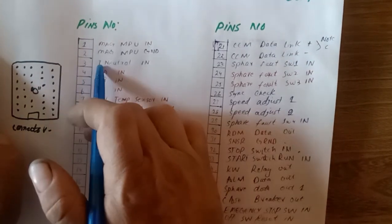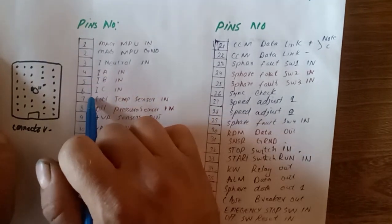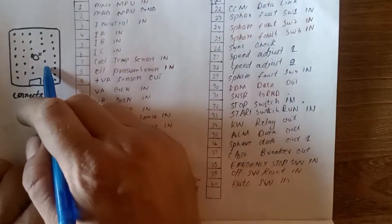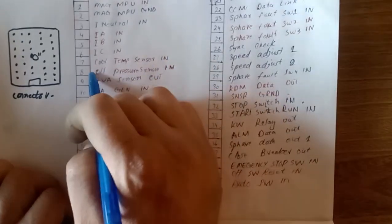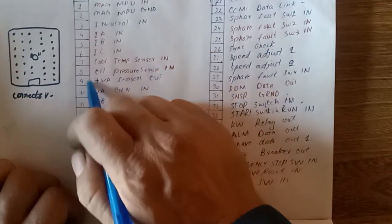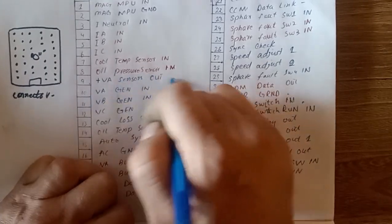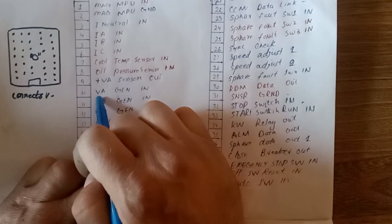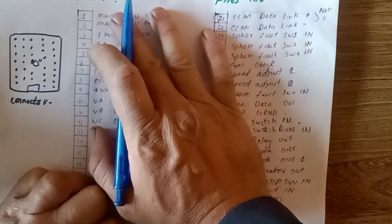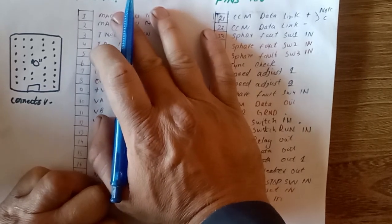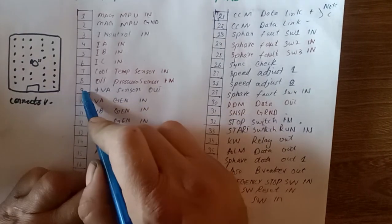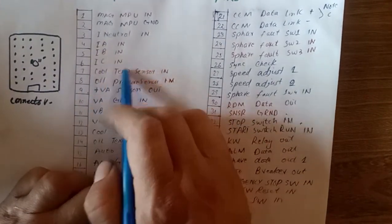Pin number 7 is for cooling temperature sensor IN, oil pressure sensor IN, plus battery volt sensor output. This is for the sensor positive voltage output. The Caterpillar sensors don't require 12 volt or 24 volt - they only require 5 volts, which you can take from here for each sensor like cooling temperature sensor, oil pressure sensor, coolant loss sensor, or oil temperature sensor.